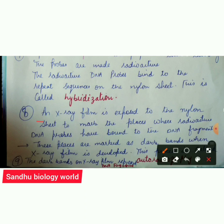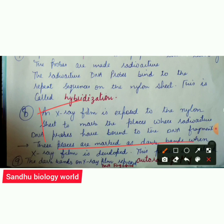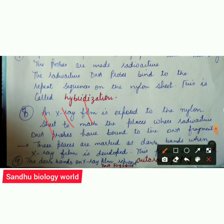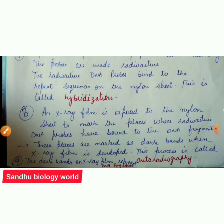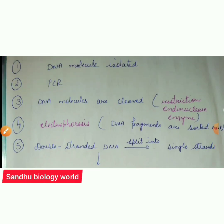After hybridization, we identify the DNA fragments. The nylon sheet is exposed to X-rays. The probes bound to DNA fragments appear as dark bands on the X-ray film. These bands are visible when viewed under X-ray. This technique is called autoradiography. The dark bands on X-rays represent the DNA fragments, completing the procedure.